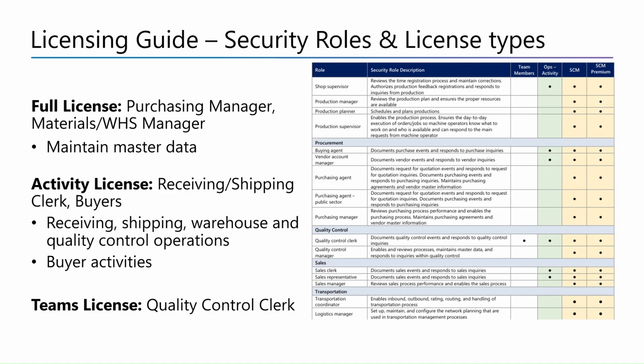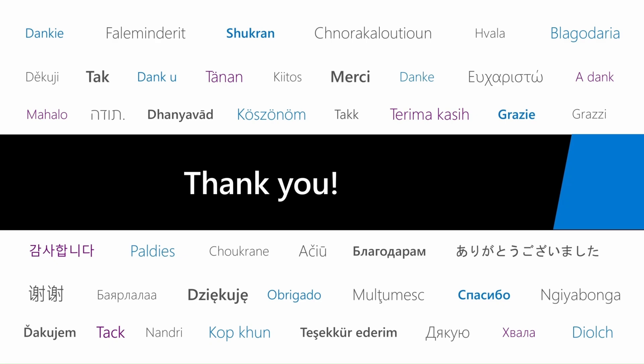This has been mapped in the licensing guide, showing roles and license types for how individual products can be used. For example, looking at the Supply Chain section of the licensing guide, it shows what activities can be performed. A shop supervisor at minimum would be an activity role, but can also require a premium Supply Chain license with additional functionality added. This is how licenses work from a licensing guide standpoint, and it is reflective of what's available for the out-of-box roles within the product. This concludes our Dynamics 365 Finance and Operations license management series.